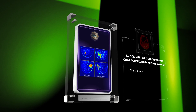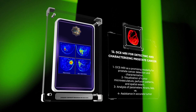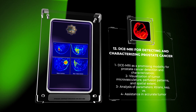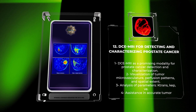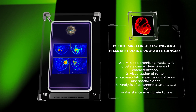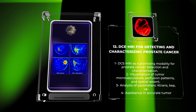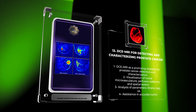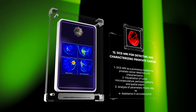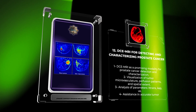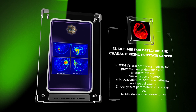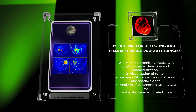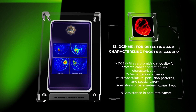Prostate cancer detection and characterization remain significant challenges in clinical practice. DCEMRI has emerged as a promising imaging modality for prostate cancer, enabling the visualization of tumor microvasculature, perfusion patterns, and spatial extent. By analyzing parameters like Ktrans, KEP, and VAI, DCEMRI can assist in accurate tumor localization, staging, and risk stratification. Additionally, ongoing research aims to establish DCEMRI as a tool for monitoring treatment response and guiding focal therapies, improving patient management and outcomes in prostate cancer care.